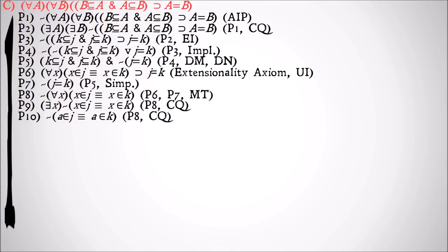A change of quantifier and then that should be existential instantiation, premise 9 - not premise 8 for change of quantifier - will give us it's not the case that A is a member of J is materially equivalent to A is a member of K. If we simplify premise 5 down, we get K is a subclass of J and J is a subclass of K.